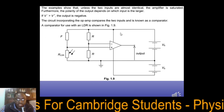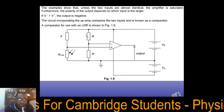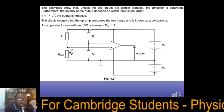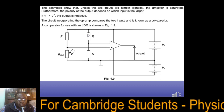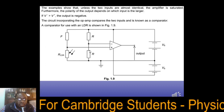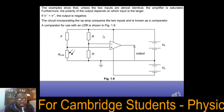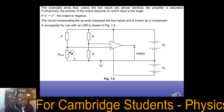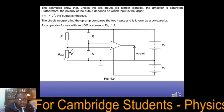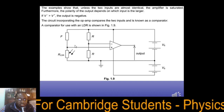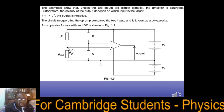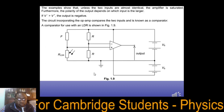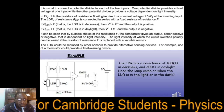What is entering the inverting input comes from this potential divider, and what is entering the non-inverting input comes from this potential divider. Using the potential divider formula: R divided by 2R, times VS — because both are connected to VS on a split supply, you get the same voltage on both sides, giving half of VS. Here we've connected a sensing device which is an LDR, so the voltage at that terminal is R_LDR divided by the total resistance, times VS.